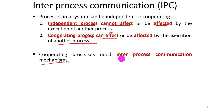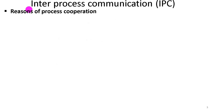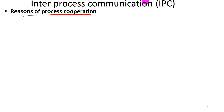When processes are working together, they need an Inter-Process Communication mechanism. The reasons for process cooperation explain why independent processes sometimes need to work together. Inter-Process Communication provides the mechanism to enable this cooperation.